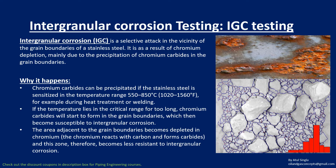Intergranular corrosion is mostly seen in stainless steel at the grain boundaries. It results from chromium depletion, caused mainly by the precipitation of chromium carbides at the grain boundaries. This happens when stainless steel is sensitized in the temperature range of 550 to 850 degrees Celsius.